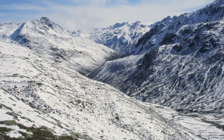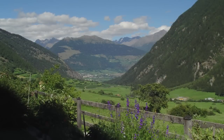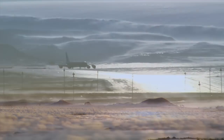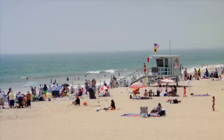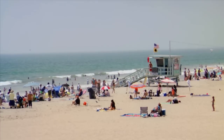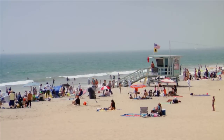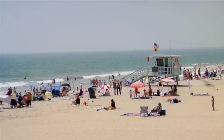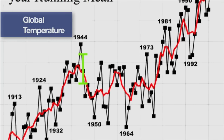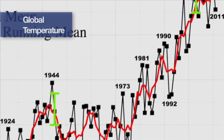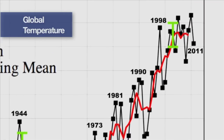For example, we know that winter will generally be cooler than summer. We also know the climate in the Mojave Desert will be much different than the climate in Greenland. Climate is measured by statistics such as average temperatures and rainfall and frequency of droughts. Climate change refers to changes in these statistics over seasons and year-to-year changes as well as decades.